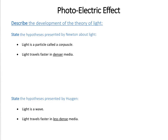In this video I'm going to be taking a look at the photoelectric effect experiment, and we're going to look at it in the context of the development of the theory of light. I'm going to start off talking about the first origins of it, talking about Newton and Huygens, then moving on to Thomas Young, and finally looking at Einstein and the photoelectric effect.